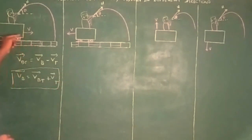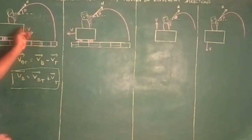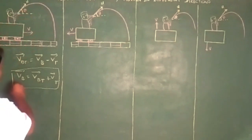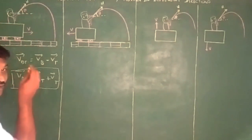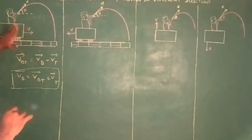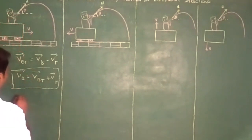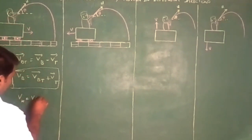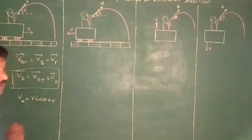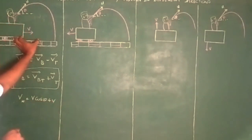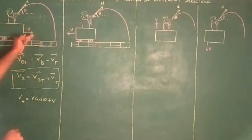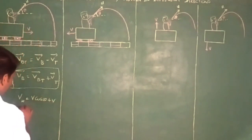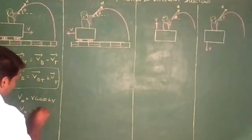Now, the trolley is moving forward and the ball is also thrown in the same direction. We have two components — the horizontal component and the vertical component. The horizontal component is v cosθ plus v, since they are in the same direction. There is no change in the vertical component, that is v sinθ.